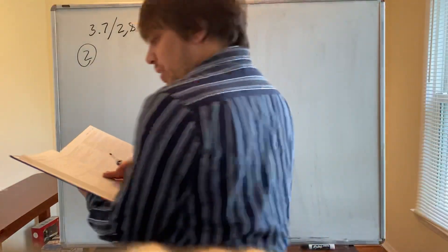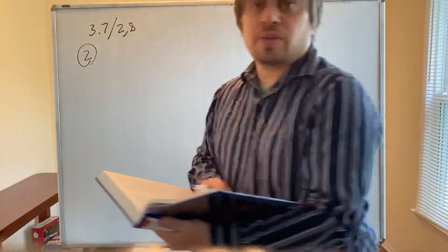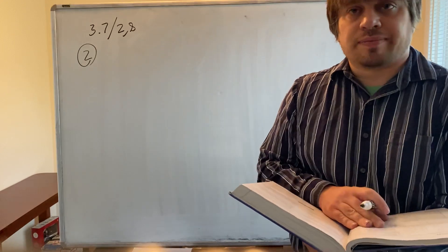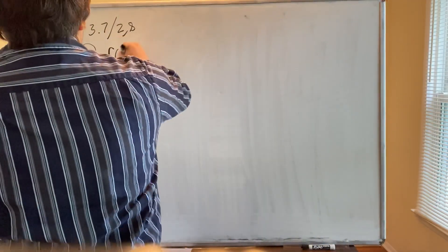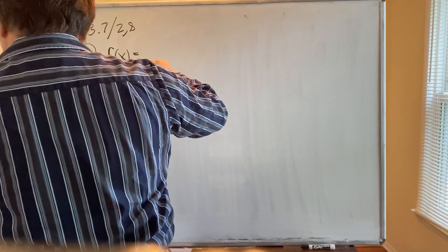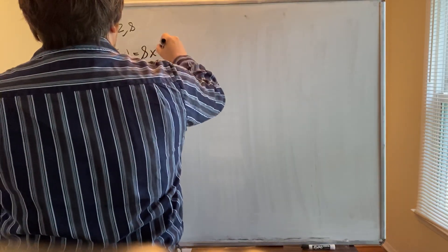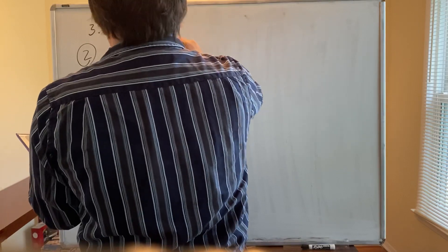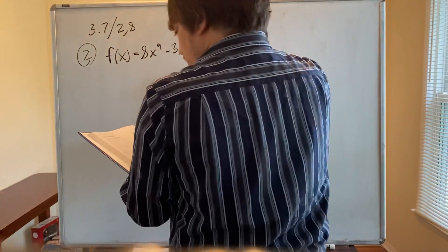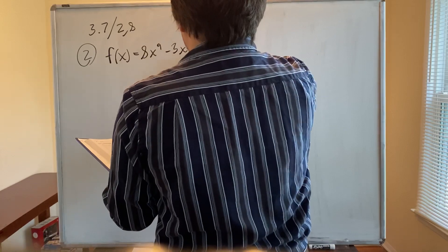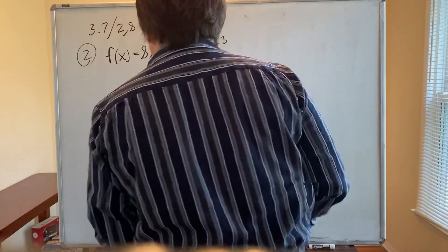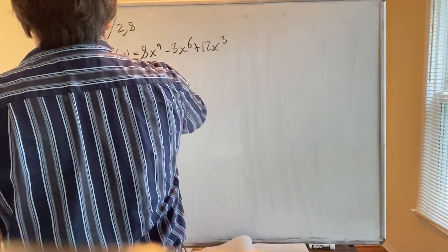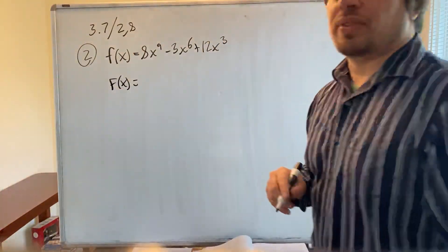Let's go over number two first. Number two says: find the most general antiderivative of the function. The function is f(x) = 8x⁹ - 3x⁶ + 12x³. We want to find the most general antiderivative, capital F(x). I'm going to take the antiderivative of each term and then add or subtract them.